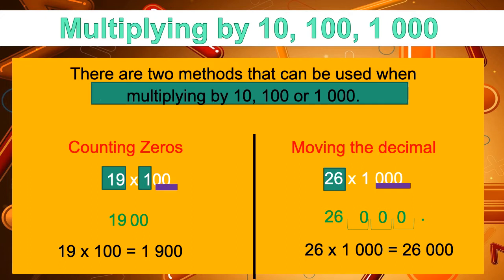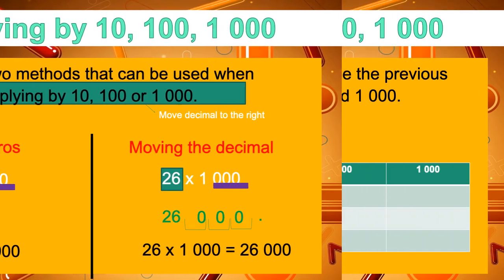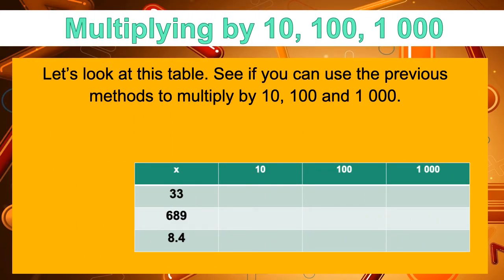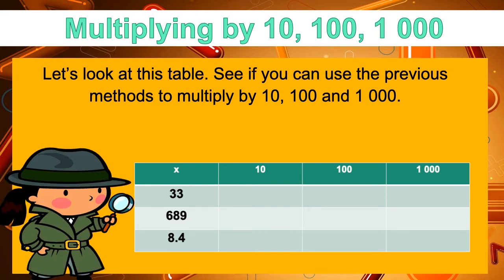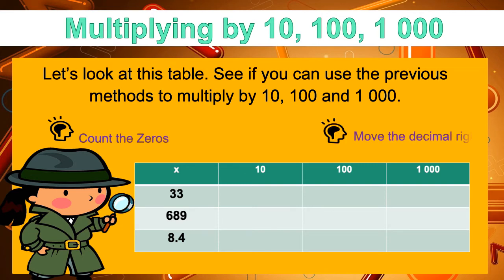Remember, multiplying by 10, 100, or 1,000, we move the decimal point to the right. Let's look at some examples. See if you can use the previous method of multiplying by 10, 100, and 1,000. Remember: count the zeros or move the decimal point to the right. Pause the video so you can complete this activity. Once you are finished, press play and I'll reveal the answers.